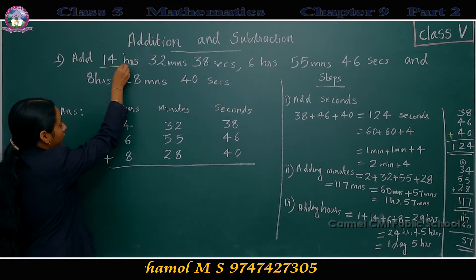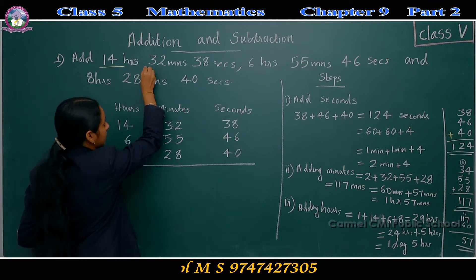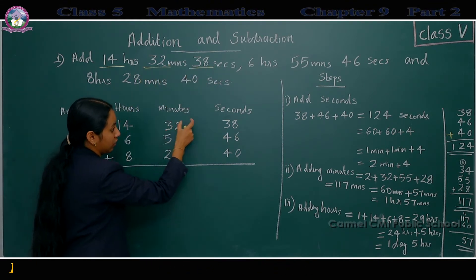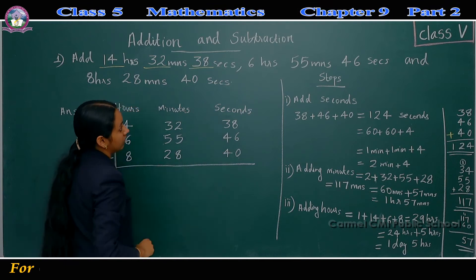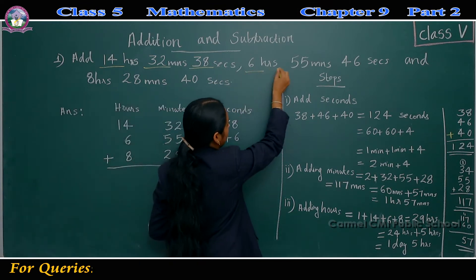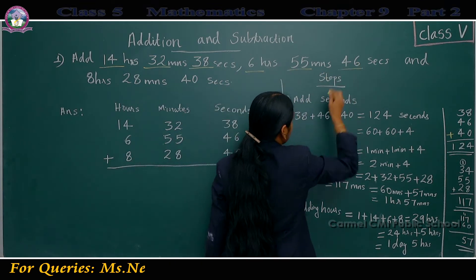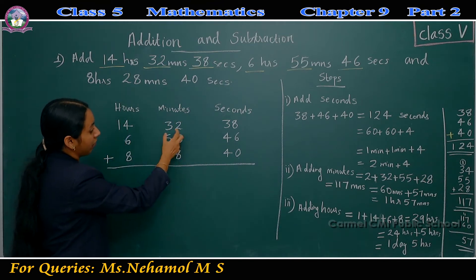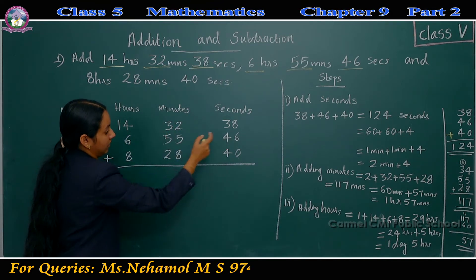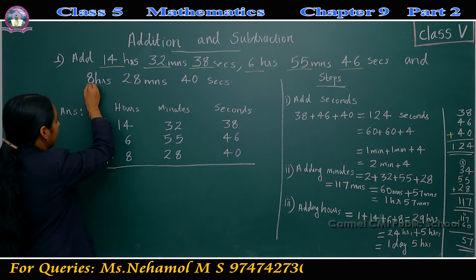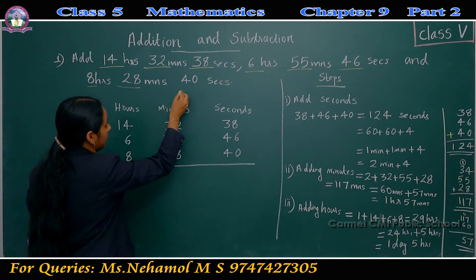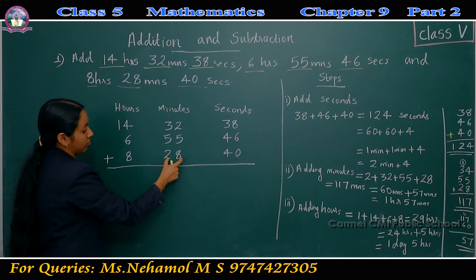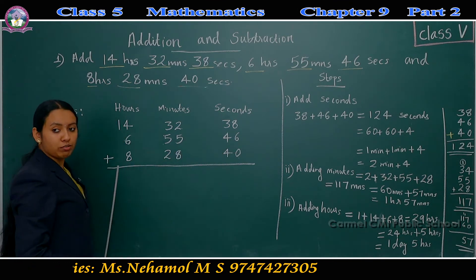First row: 14 hours, 32 minutes, 38 seconds — written as 14, 32, 38. Then 6 hours, 55 minutes, 46 seconds — written as 6, 55, 46. Then 8 hours, 28 minutes, 40 seconds — written as 8, 28, 40.